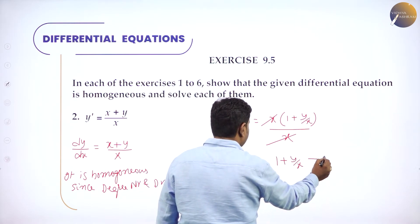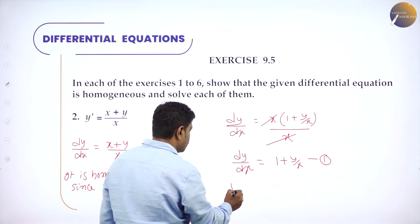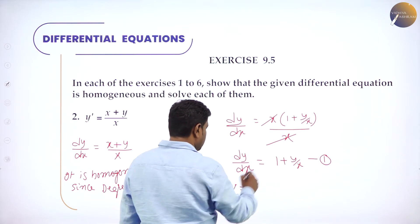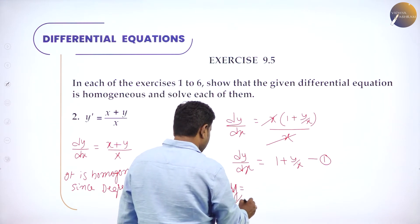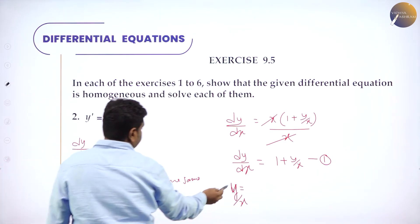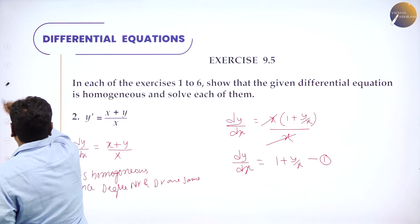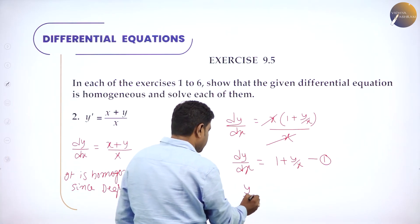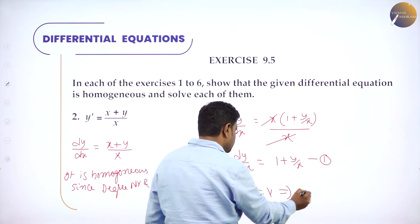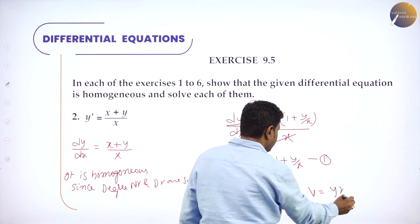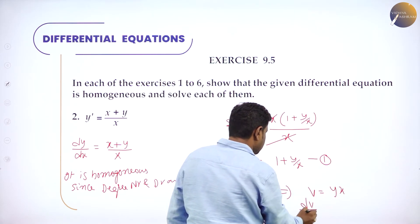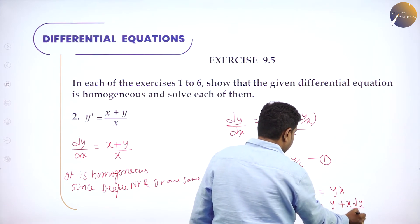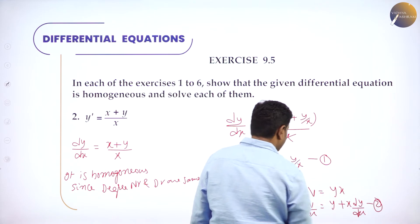Put v = y/x, or y = vx. Differentiate both sides: dy/dx = v·(derivative of x is 1) + x·dv/dx. Call it equation 2. Substitute equation 2 into equation 1.